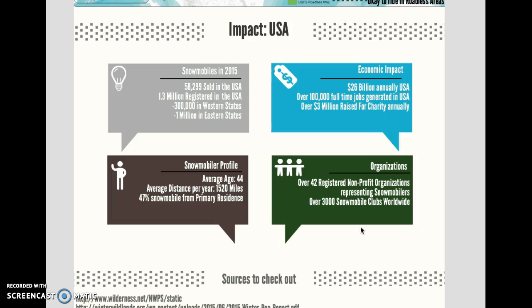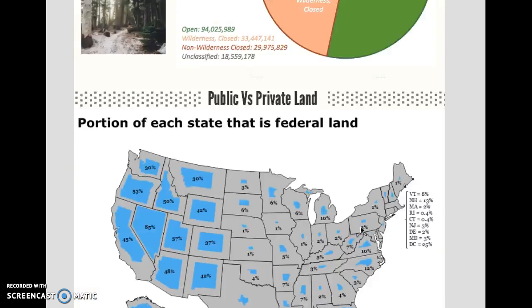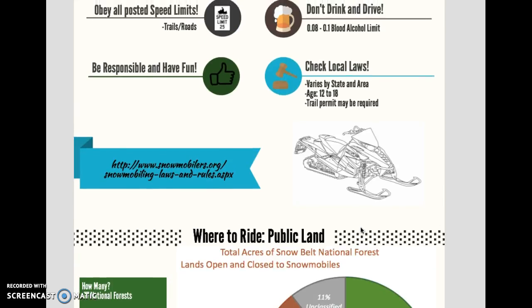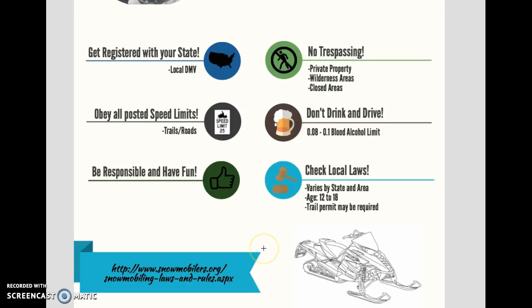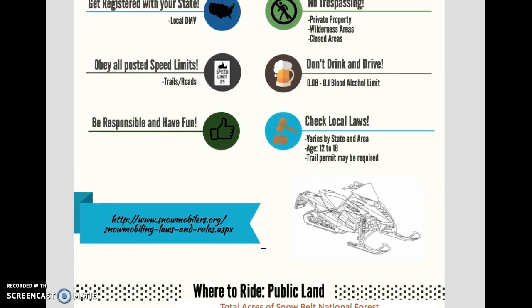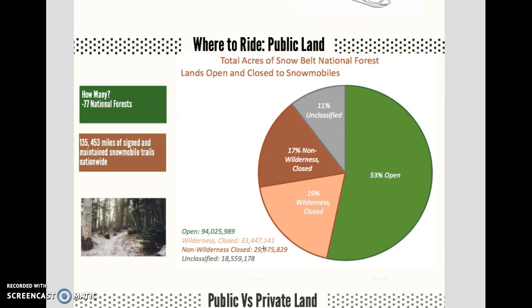For my infograph, because I chose snowmobiling as my topic, I chose a variety of different colors that are found in nature, such as browns, grays, greens, and blues. I tried to use a variety of these colors to make it interesting, but I tried to make each of the different grids flow together.